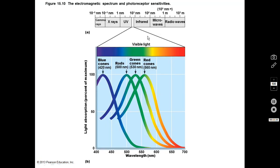Here's the electromagnetic spectrum — everything from gamma rays to radio waves — and you can see we have this very tiny portion of visible light that we can actually perceive. Our rods are right in the middle of that range, maybe a little more toward the 400 nanometer end. Then we have blue cones, green cones, and red cones, each perceiving a different wavelength within the visible light range.